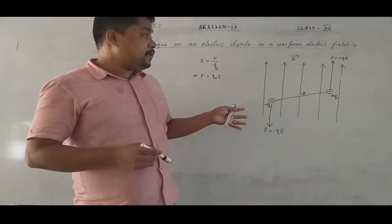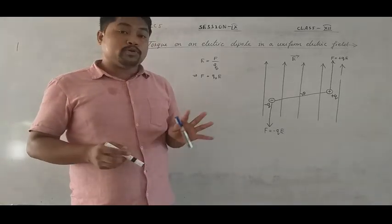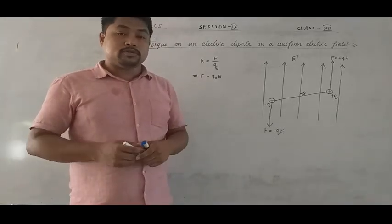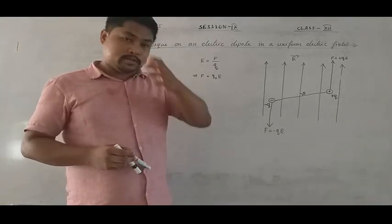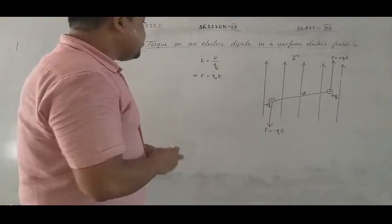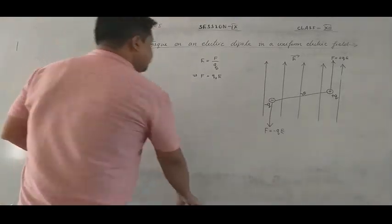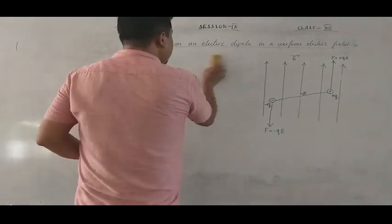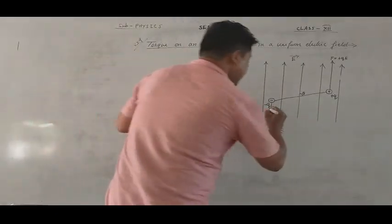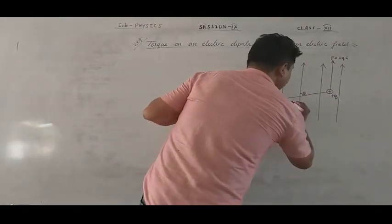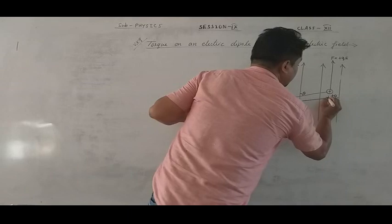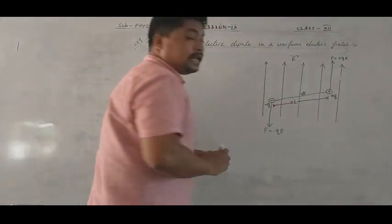It is the electric dipole, and torque is a couple of force. The dipole length is called twice L, that is 2L, which is called the dipole length.